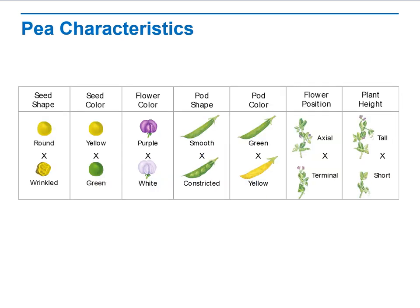Among the most studied characteristics of pea plants that Mendel examined were the shape of the seeds, the color of the seeds, the flower color, the shape of the pods, the flower position — whether it was axial or terminal — and the height of the plant, whether it was tall or short.